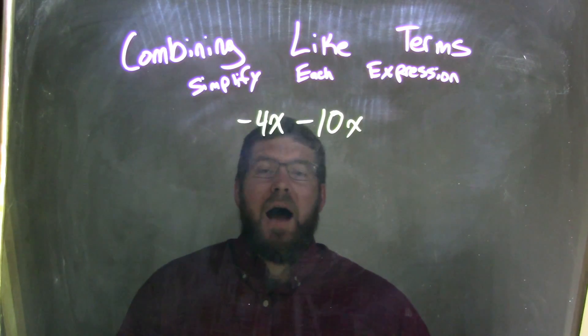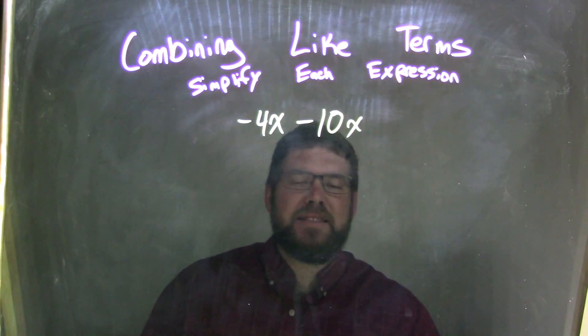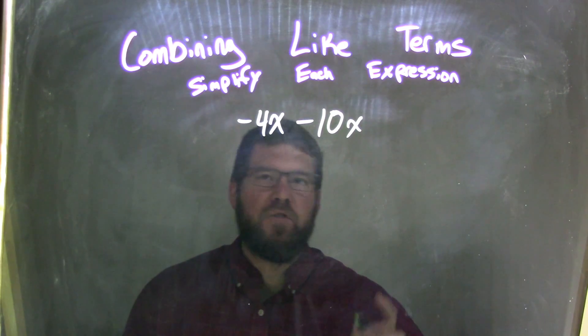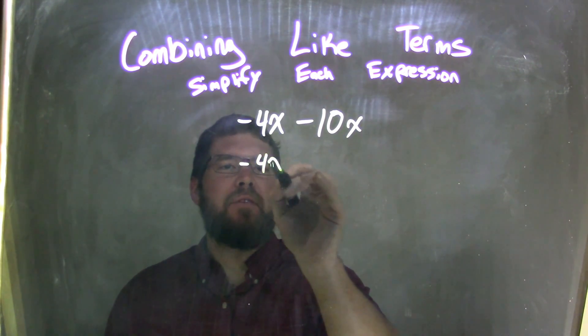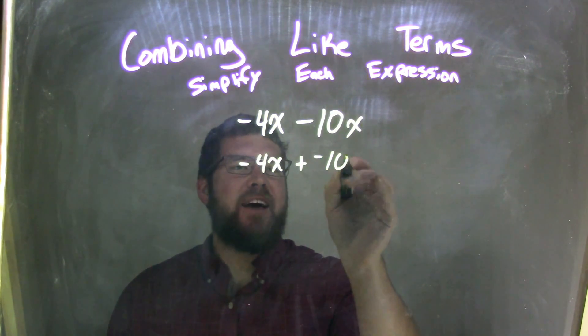Well, I like to rewrite this. Instead of minus 10x, I'll write it as adding a negative 10x. So I'm going to do that: negative 4x plus negative 10x.